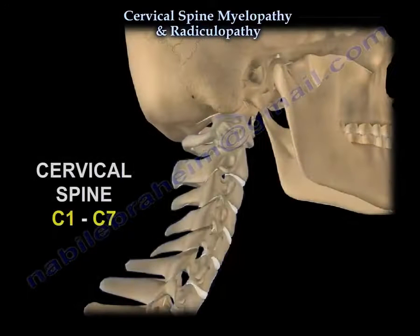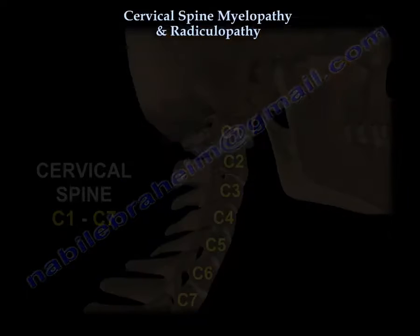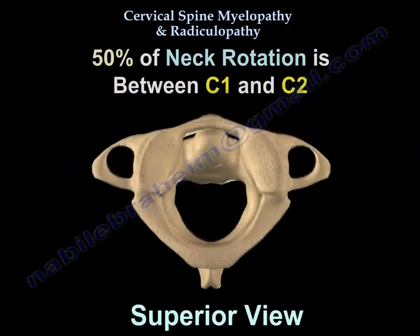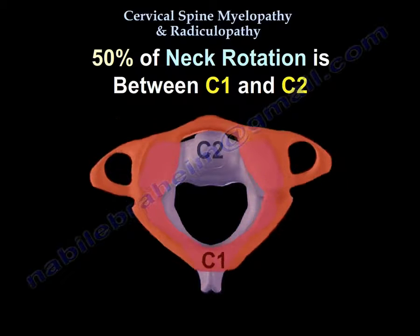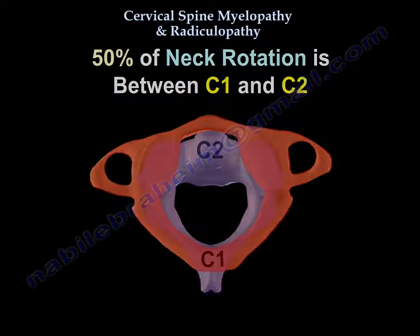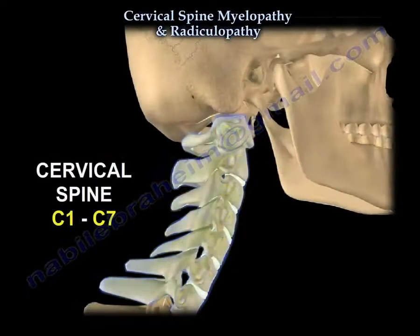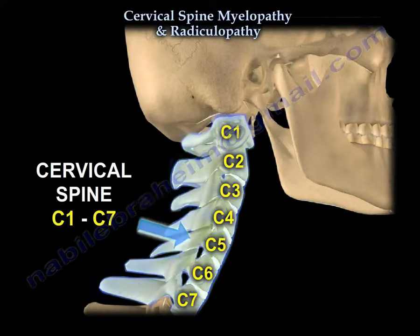Where does rotation of the C-spine mostly occur? C1 and C2 — about 50% occurs at C1 and C2. Where does flexion-extension of the C-spine mostly occur? C4 and C5.